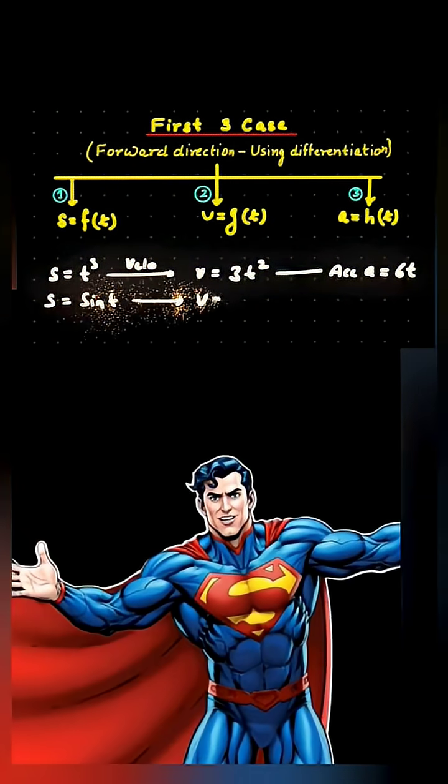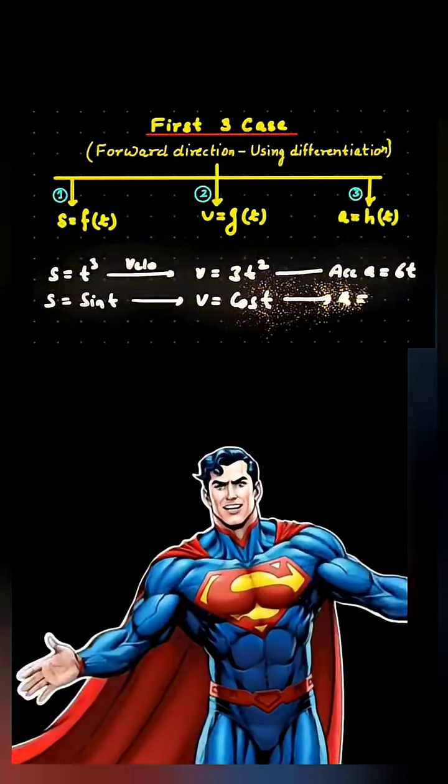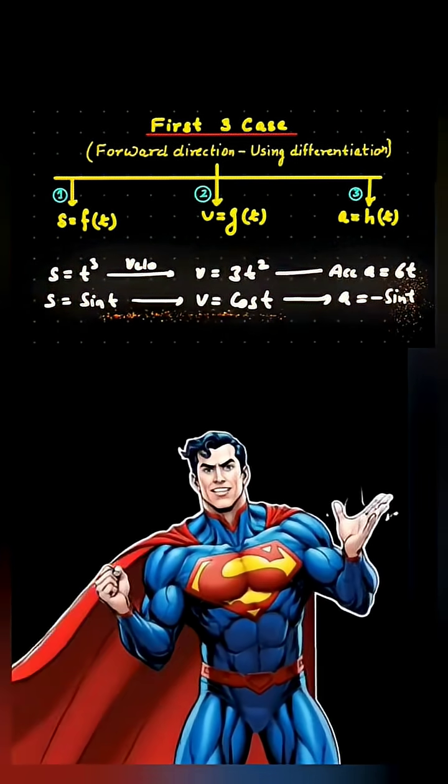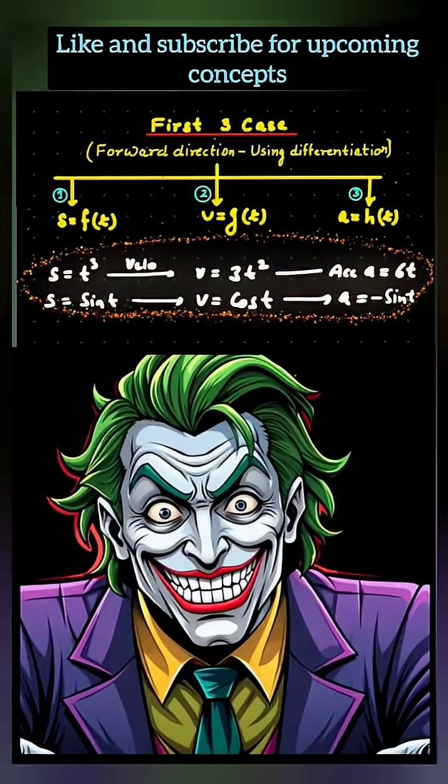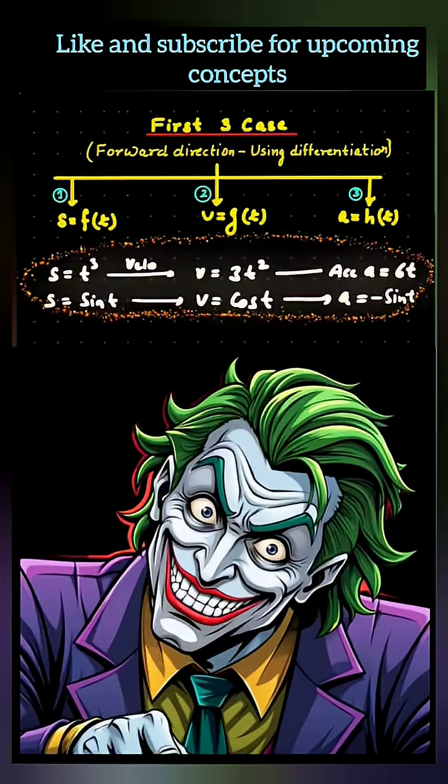Again, if displacement is sine T, velocity will be cos T, and acceleration will be minus sine T. Ha! So every time we differentiate, we move forward in motion. First gives velocity, second gives acceleration.